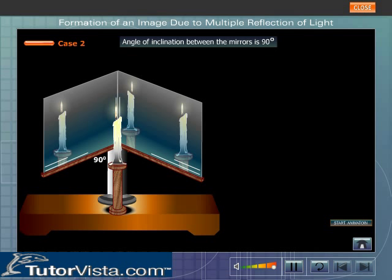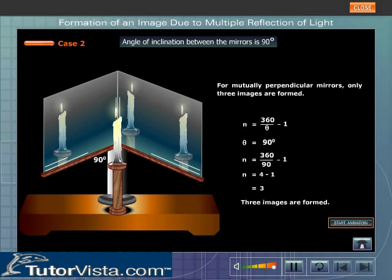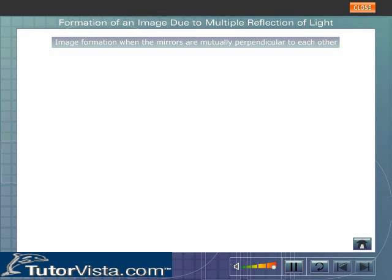When the mirrors are mutually perpendicular to each other, we obtain three images. This can be mathematically proved using the relation n = 360 divided by theta, minus 1. Click on the button to view the animation.